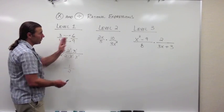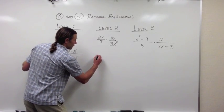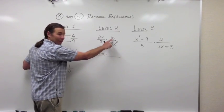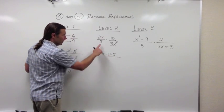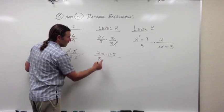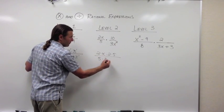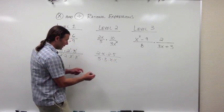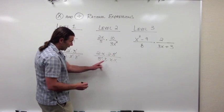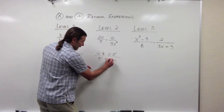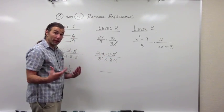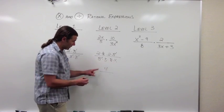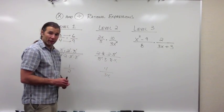Now let's look at this same process at level 2. I'll draw one big fraction bar and factor everything out. 2x factors as 2 times x, times 10, which factors as 2 times 5. 5 is prime. 3x squared: 3 is prime, and x squared factors as x times x. Now I divide out the common factors — a common factor of 5, and a common factor of x. The final simplified answer: in the numerator I have 2 times 2, which is 4; in the denominator I have 3 times x, which is 3x. So the answer is 4 over 3x.